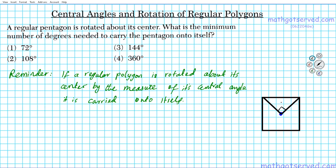So the central angle of a square is 90 degrees because there are four of them. You just take the entire circle, 360 degrees, divided by four. The central angle of a square is 90 degrees.